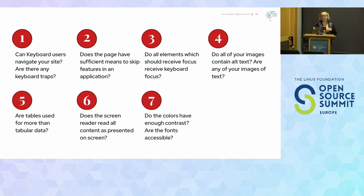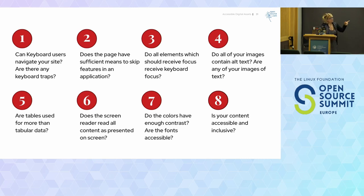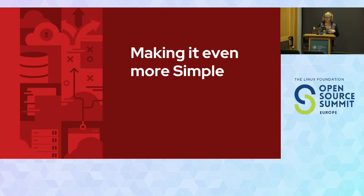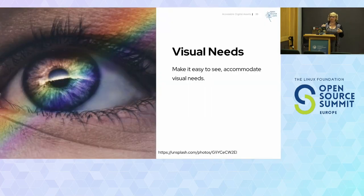Do your colors have enough contrast? Are your fonts accessible? And I like to throw this one out there — is your content accessible and inclusive? Inclusive is something you need to think about what that means to you. So again, those four parameters: you've got to make it easy to see.